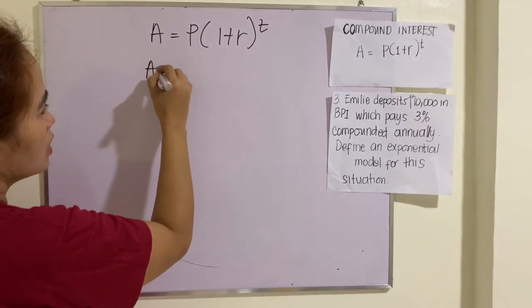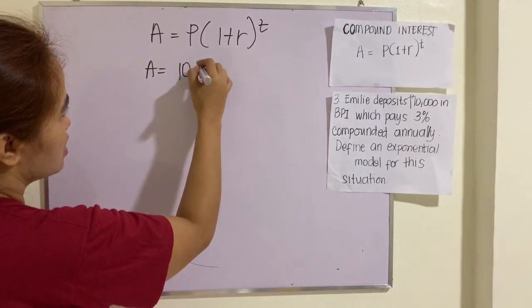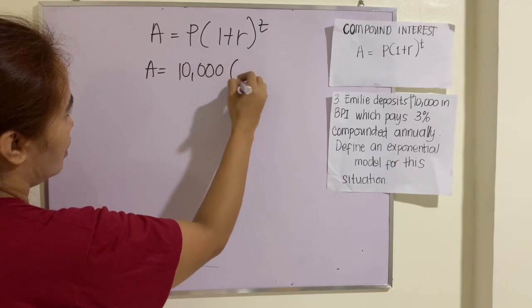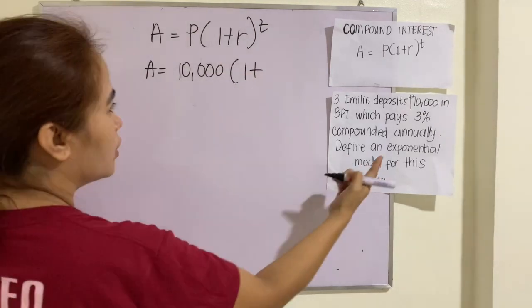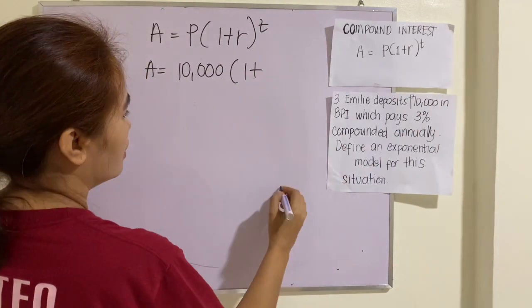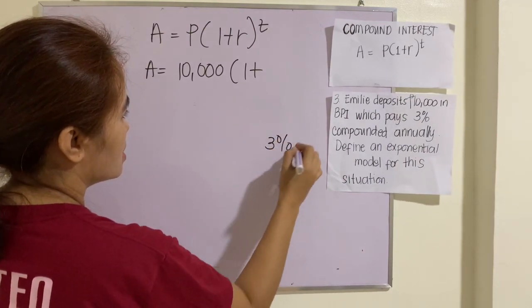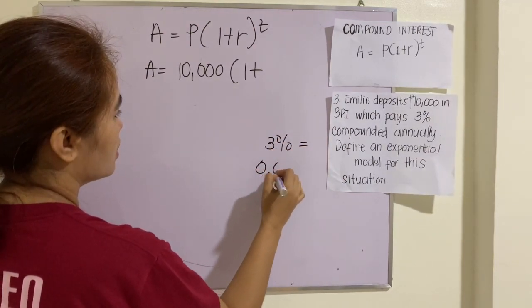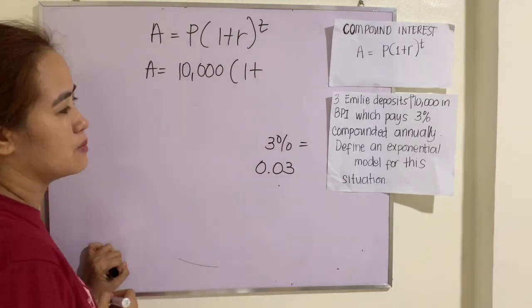So A equals, that is 10,000, the principal amount. So 1 plus, we know that 3%, 3% is equivalent to 0.03. So that is in decimal form.